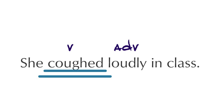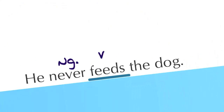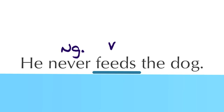If that seems confusing, just remember that when all else fails, adverbs almost always end in -ly. Also remember when identifying the verb in a sentence that negatives are never verbs. Take for example the sentence 'he never feeds the dog.' The verb is feeds, but never is not included in the verb because it is a negative.